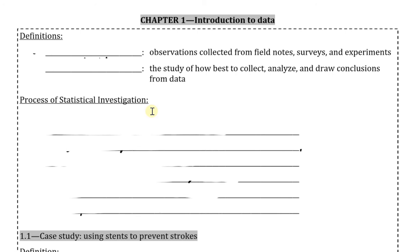There are a few definitions introduced in this section that we need to consider, the first of which being data. We will call any observations gathered from field notes, surveys, and experiments, data. There is a common misconception that data needs to be numerical in nature, such as the height or weight of an individual. However, this is not necessarily the case, as data can also take non-numeric form, such as an individual's hair color. Also note that data can come from multiple different sources, so there are many ways to gather data.